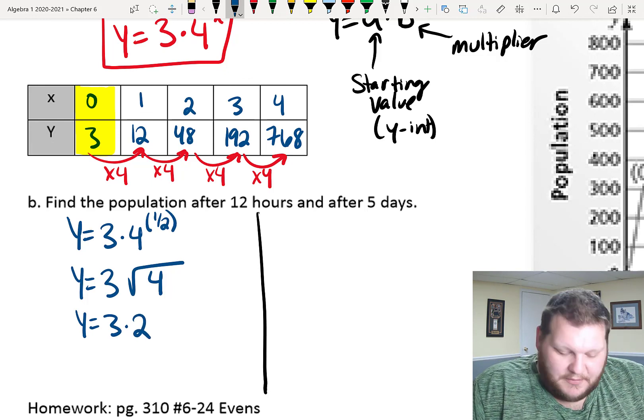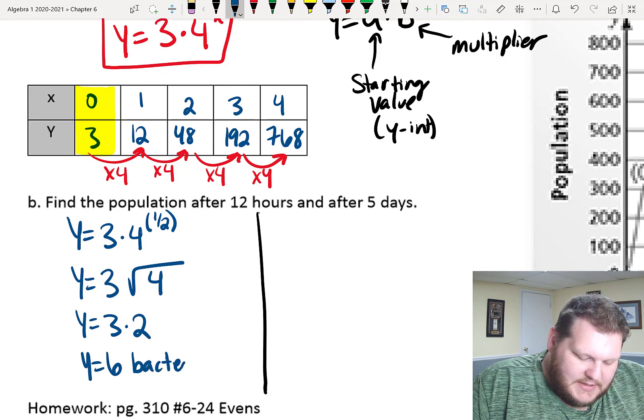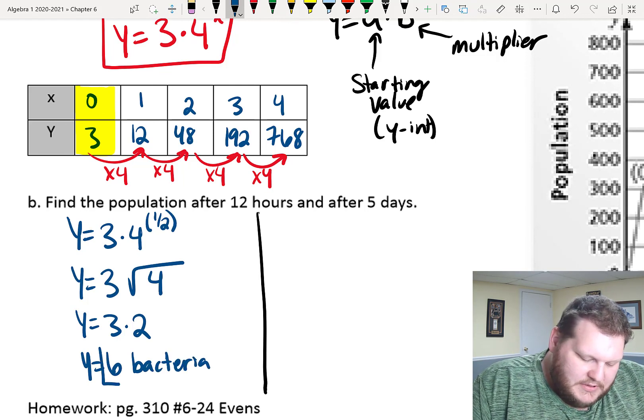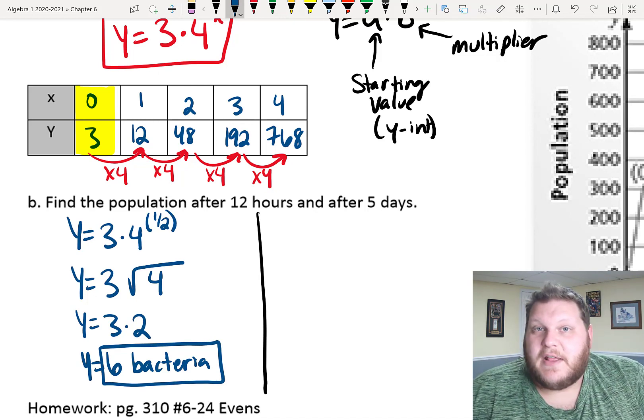So, when we multiply by 3, we should get 6 bacteria. 6 bacteria after 12 hours. That's our answer for that first part for part B.